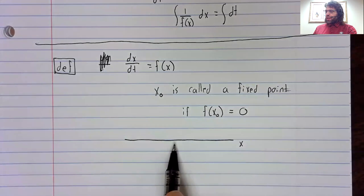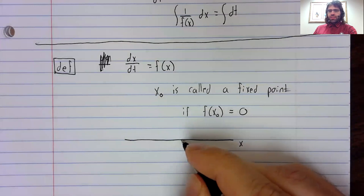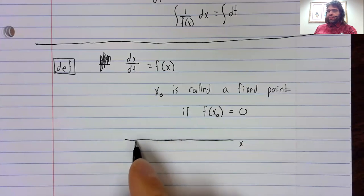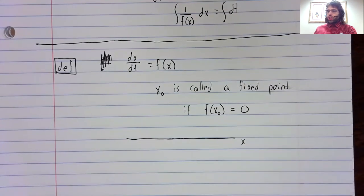If f(x) is positive, we're moving to the right. If f(x) is negative, we're moving to the left. If f(x) is 0, if the rate of change is 0,